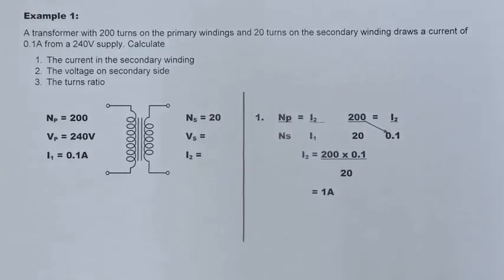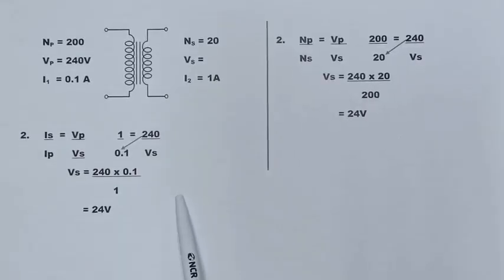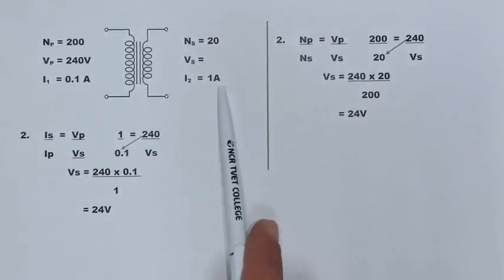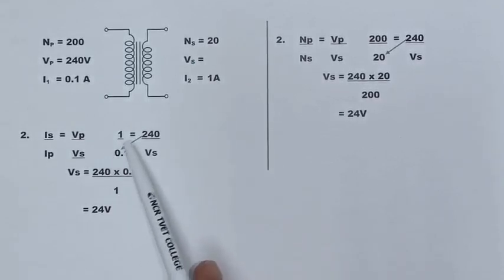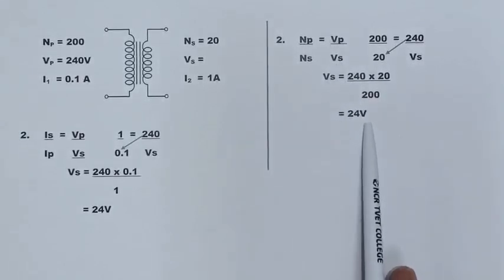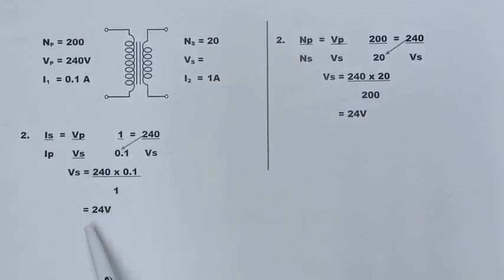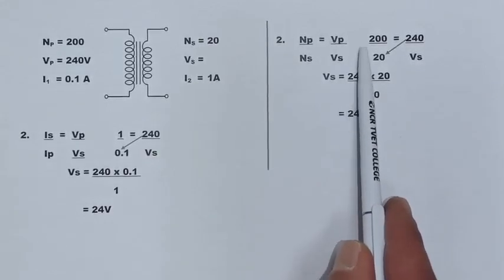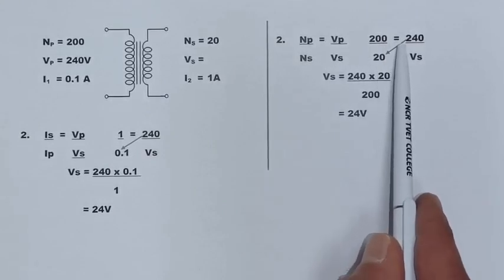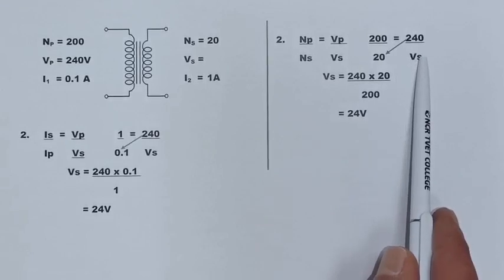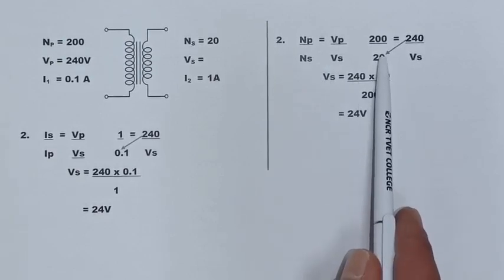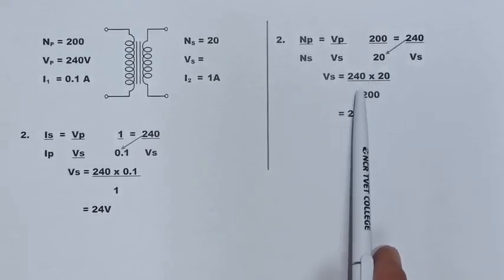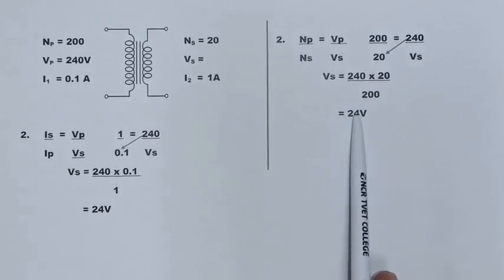Next, we calculate the secondary voltage. Before doing so, write in the value obtained in the first question — I2 equals 1 amp. Using the turns-to-voltage ratio: 200 over 20 equals 240 over the secondary voltage. Making the secondary voltage the subject and cross-multiplying: 240 multiplied by 20 divided by 200 gives us 24 volts.